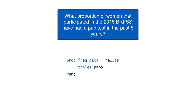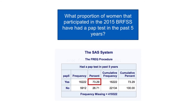Now we can run a simple one-way frequency table to answer our research question: What proportion of women that participated in the 2015 BRFSS have had a PAP test in the past five years? The answer is 73% of women who participated in the 2015 BRFSS had a PAP test in the past five years.